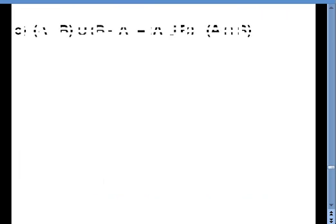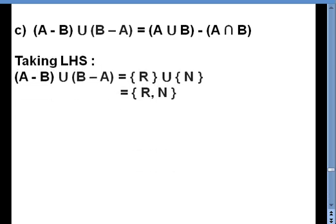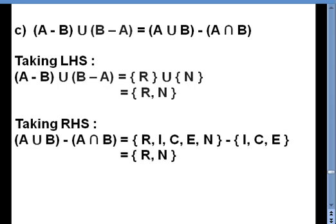For part C of question 3, we verify: (A minus B) union (B minus A) equals (A union B) minus (A intersection B). Taking LHS: A minus B is {R} and B minus A is {N}, so their union is {R, N}. Taking RHS: A union B is {R, I, C, E, N} minus A intersection B which is {I, C, E}, removing those elements gives {R, N}. Comparing LHS and RHS, both equal {R, N}, hence proved.